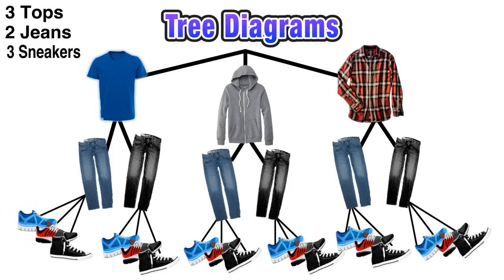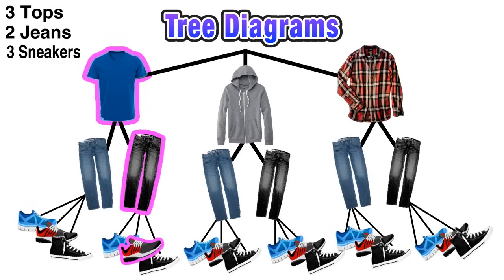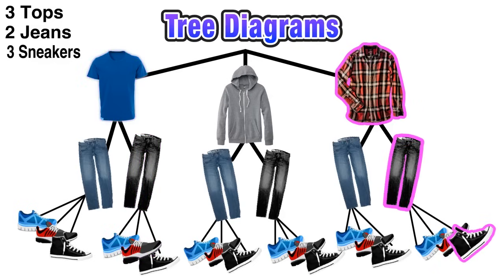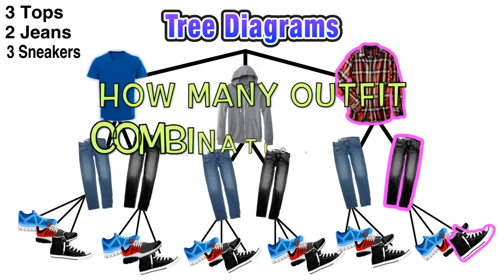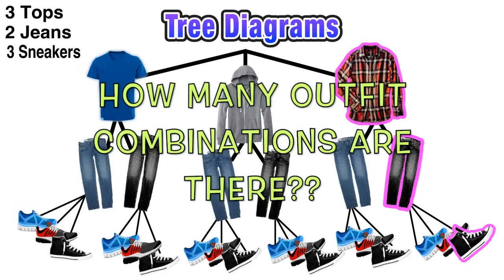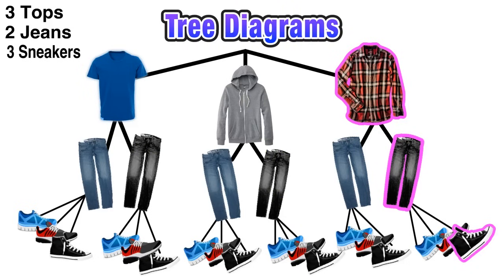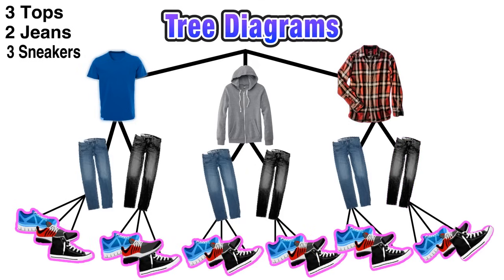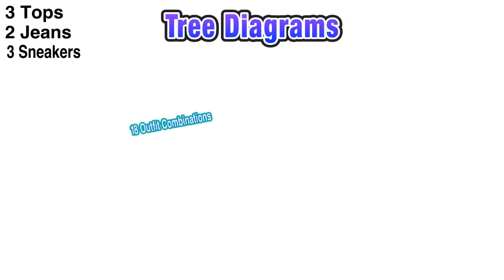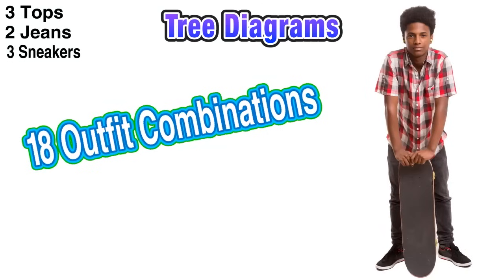Now we have completed our tree diagram and we can use it to figure out the total number of possible combinations. For example, one outfit combination is the blue t-shirt with black jeans and casual sneakers. Another possible outfit combination would be the red plaid shirt with black jeans and the high top sneaker. We can figure out the total number of different outfit combinations by counting all of the shoes in the bottom branches of the tree diagram, and if we count all of these we get a total of 18 different outfit combinations.